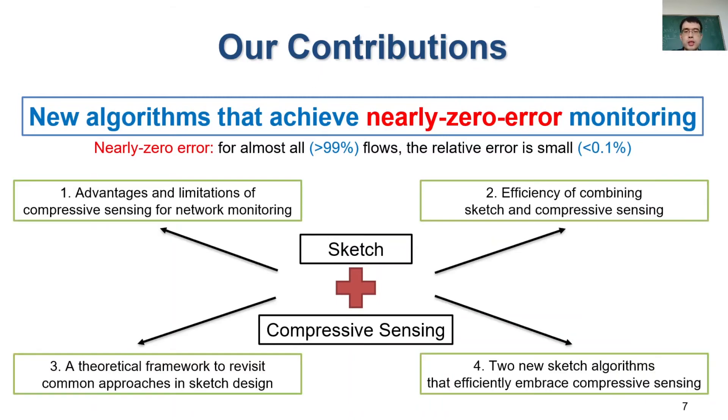Specifically, our work contains four parts. First, we study the advantages and limitations of compressive sensing in network monitoring. Second, we formulate sketch algorithms in the form of compressive sensing, and then study the efficiency of combining sketch algorithm and compressive sensing. Third, we build a theoretical framework to revisit the common approaches in sketch algorithms from a new perspective of compressive sensing. And finally, we propose two new sketch algorithms. We will introduce the four aspects in the following.